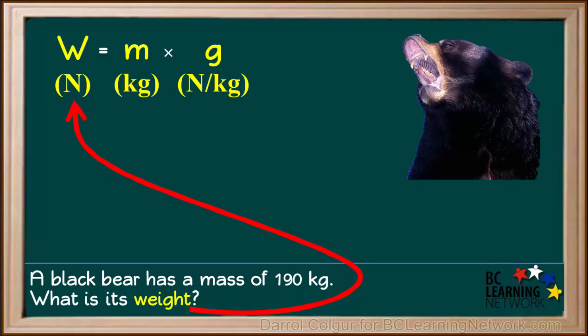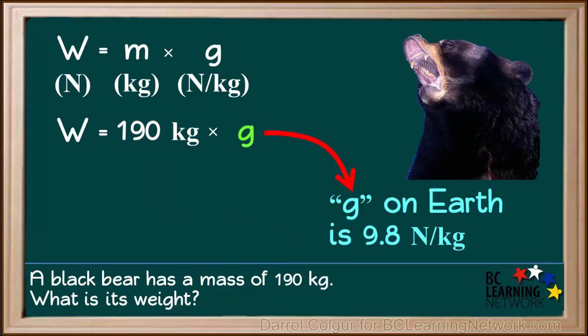So we use the equation W equals m times g, where W is the weight in newtons, m is the mass in kilograms, and g is the acceleration of gravity in newtons per kilogram. The question tells us that the bear has a mass of 190 kilograms. So, we can substitute 190 kilograms in for mass. It is known that the value for g on Earth is 9.8 newtons per kilogram. So, we can substitute 9.8 newtons per kilogram in for g in this equation.